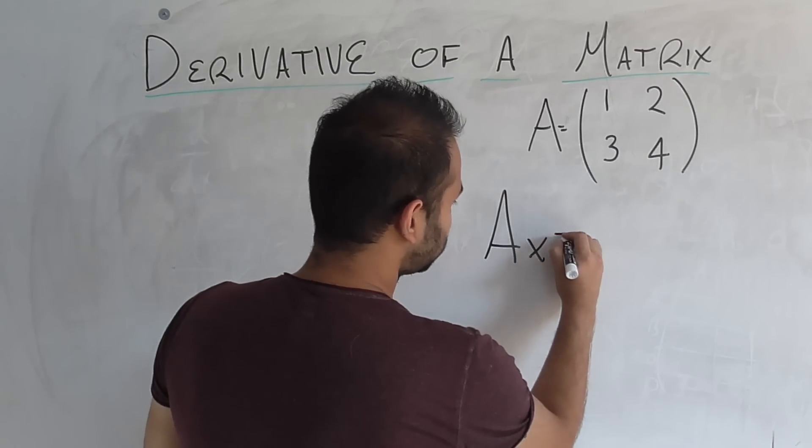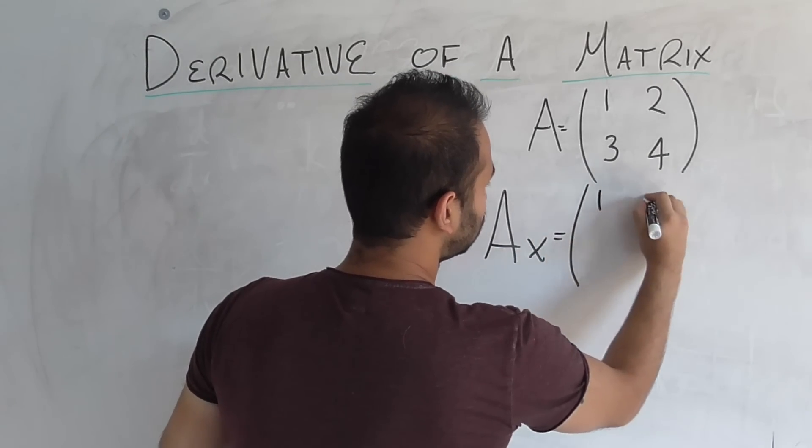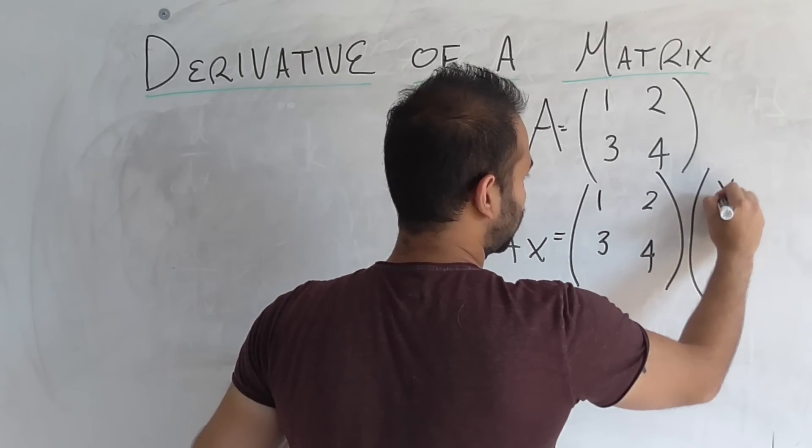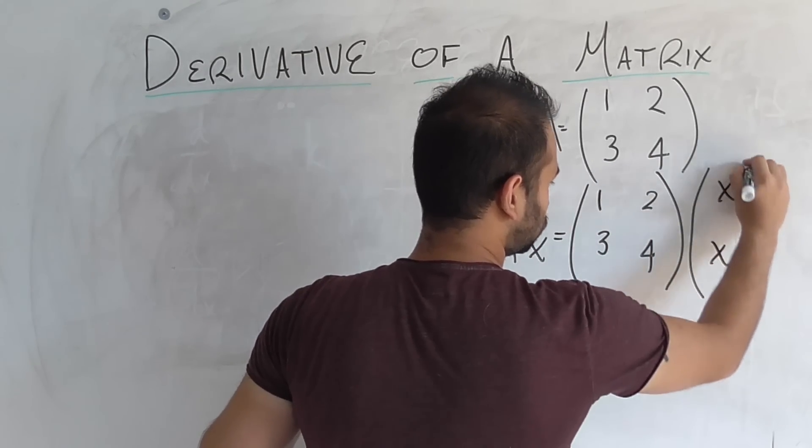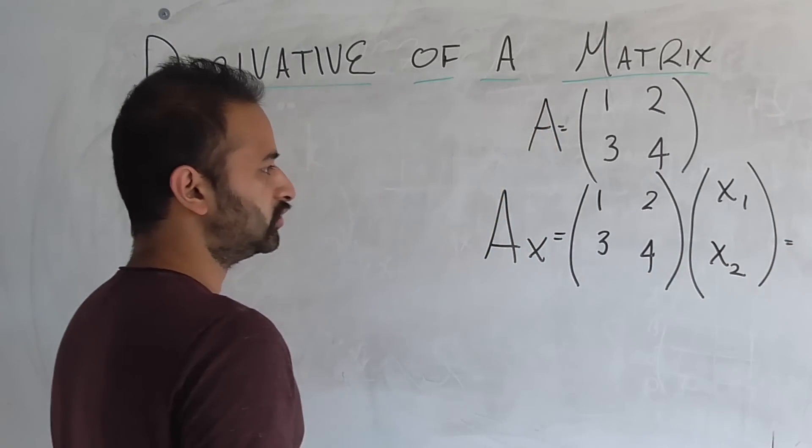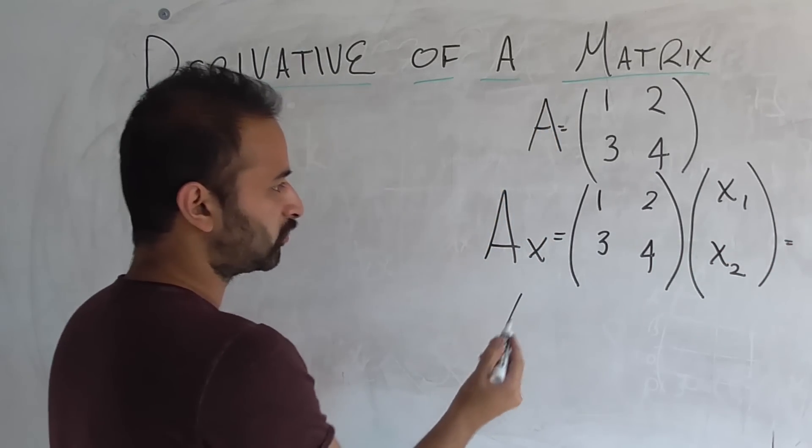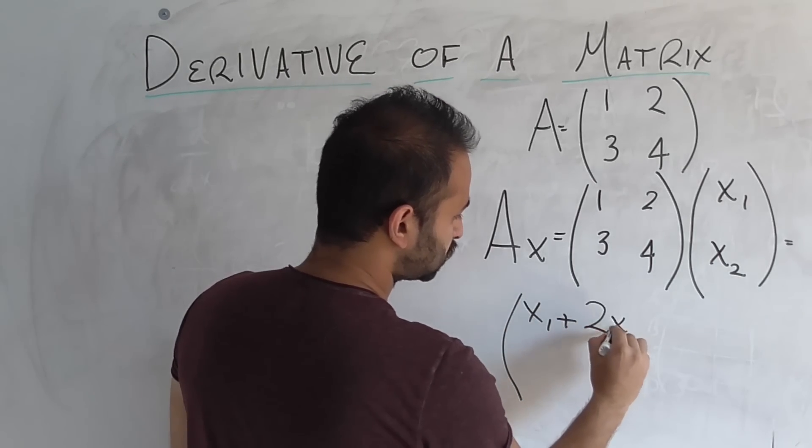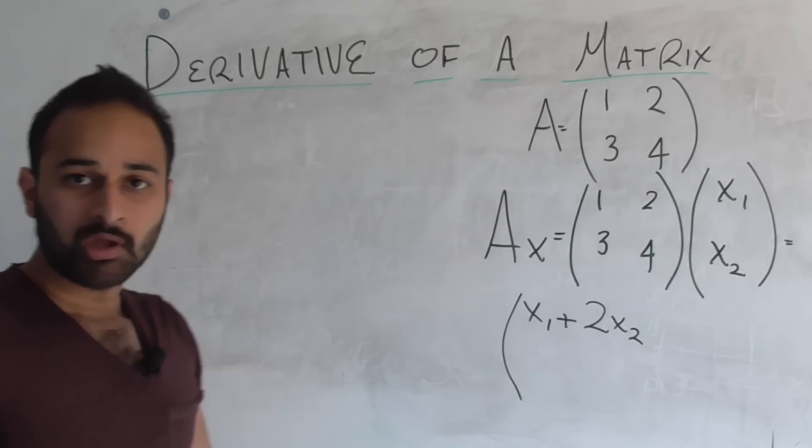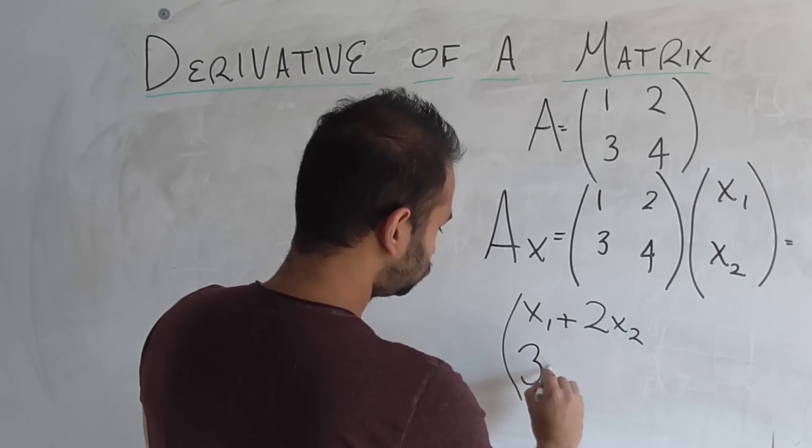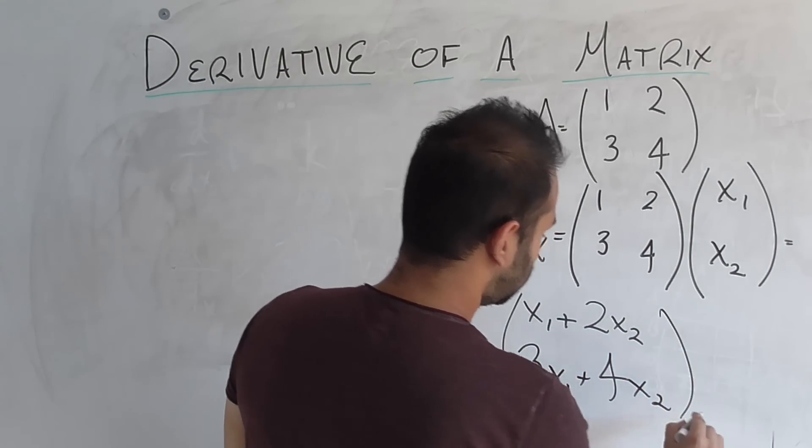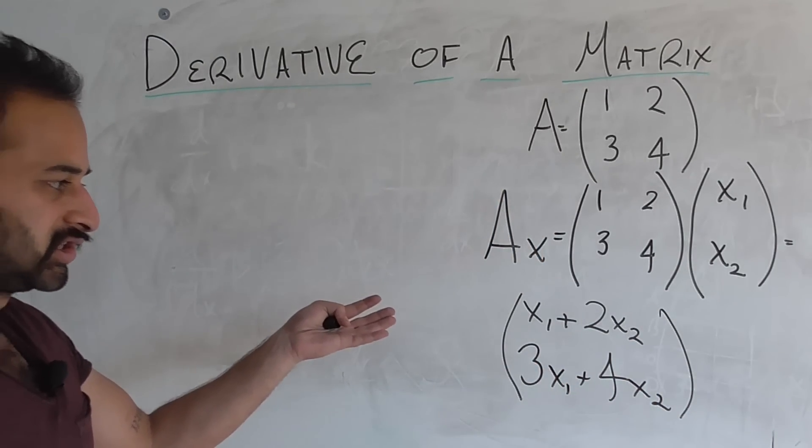So we're going to write it all out in longhand notation, because it's going to help us out. A times x is simply 1, 2, 3, 4, and x itself has two entries, x1, x2. Now, if we go ahead and do this matrix and vector multiplication, we get x1 plus 2x2 on the top, right? On the bottom, we're going to get 3x1 plus 4x2. So that is what A times x is equal to.